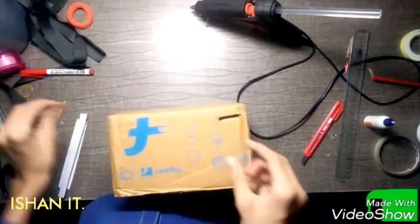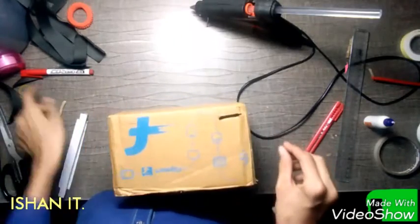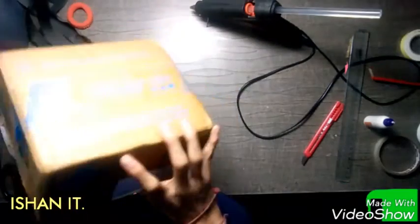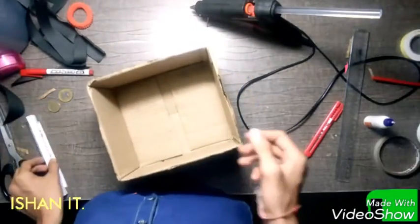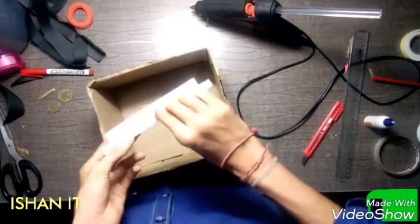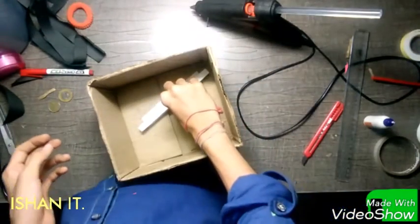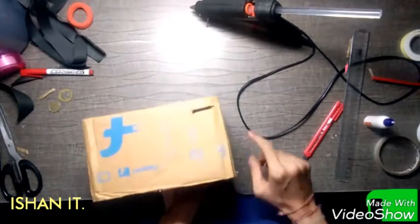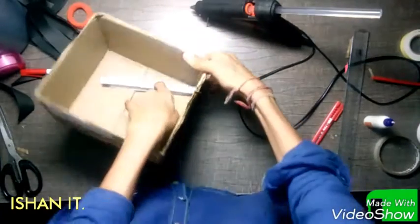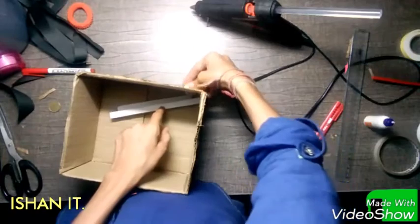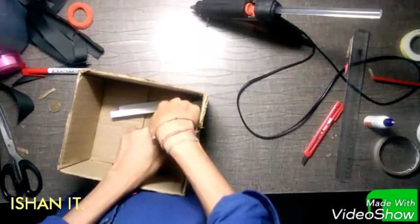The hole is ready like this. The coin will go inside easily. Now we will take this part which we have made and stick it beside the hole so the coin comes from here and rolls down easily.